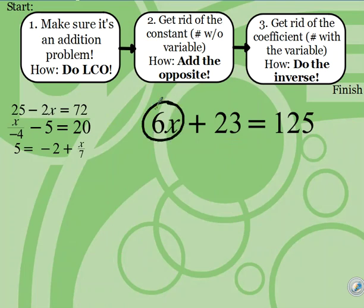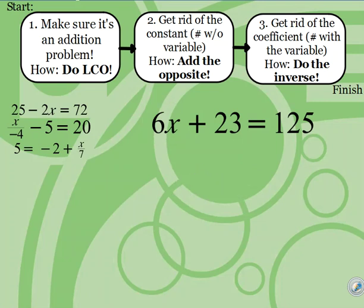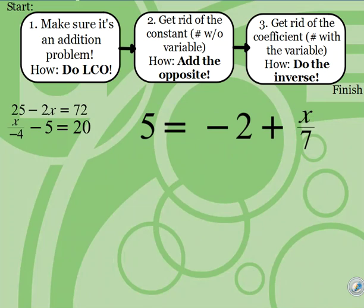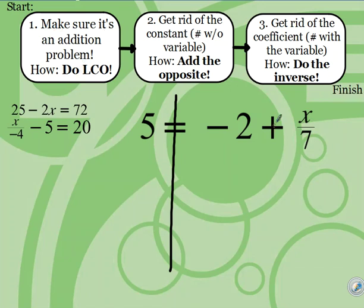The inverse of multiply by 6 is to divide by 6. Multiplication and division are inverse operations — the inverse of multiply is divide, and the inverse of divide is multiply. Let's move on to the second example. You'll notice this one's a little bit different: our variable is actually on the right side of the equation. That doesn't change anything for us. We still draw our line and do everything we did before, starting over with our flowchart. Make sure it's an addition problem — it is, so we don't need to do any LCO.